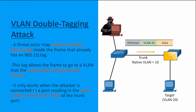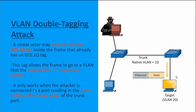As that frame moves across the trunk link, the first header of VLAN 10 was removed, and now the internal tag, which is VLAN 20, still exists. The second switch is going to receive that frame, strip off that VLAN 20 header, and then forward out any VLAN 20 ports, which includes down to the targeted host. This effectively allows the threat actor machine on VLAN 10 to communicate to the target on VLAN 20 using a double tag.